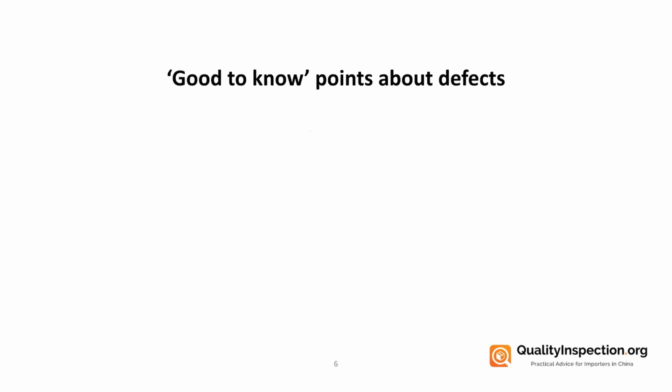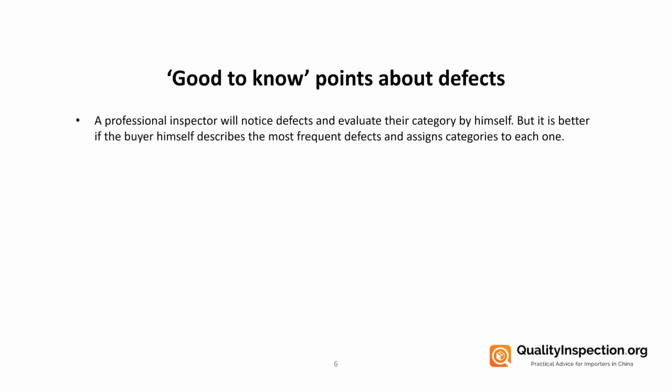A few more points to know about defects. Professional inspectors will notice defects and evaluate categories by themselves if left to their own devices, but as the buyer you should be defining what defects are and are not to you, showing your inspectors what these defects are, and assigning the categories for each one that they're going to follow. Defects aren't only on the products — they can be on labeling or on packaging as well.